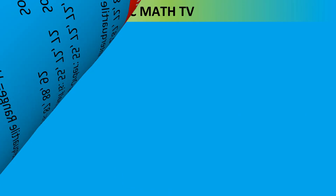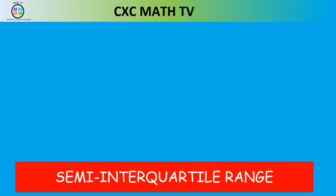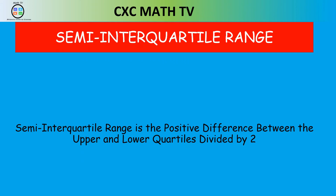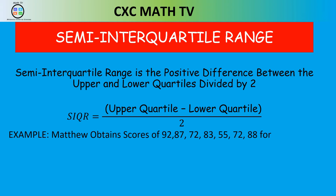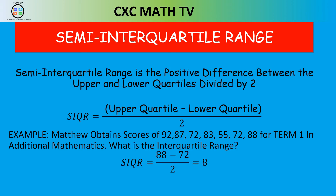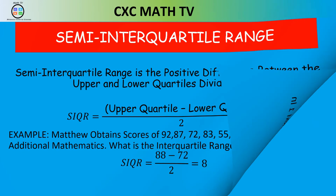Another measure is the semi-interquartile range. The semi-interquartile range is the positive difference between the upper and lower quartiles divided by two — essentially IQR ÷ 2. Since we already found the IQR, we just divide it by 2 to get the semi-interquartile range.